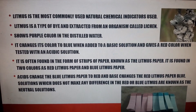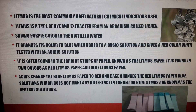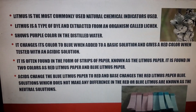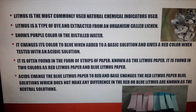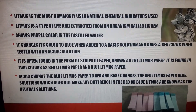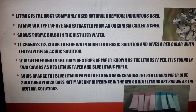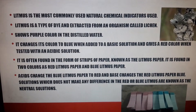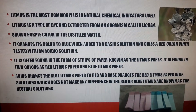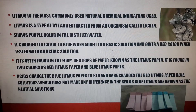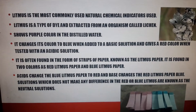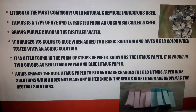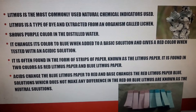There are two types of litmus paper: red litmus paper and blue litmus paper. If you add blue litmus paper to acid, it will change to red. If you add a red litmus paper to a base, it will change to blue. For a neutral solution, neither the red litmus paper nor the blue litmus paper will change its color, so the solution will be a neutral solution.